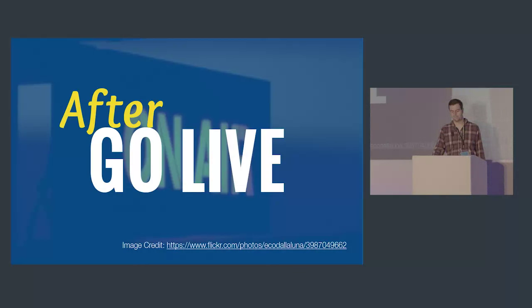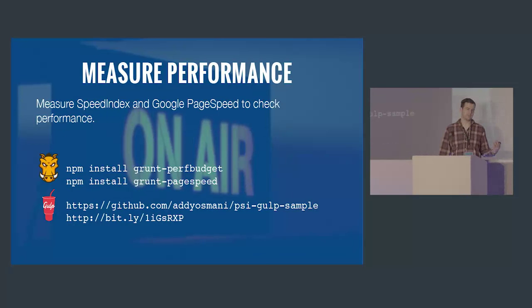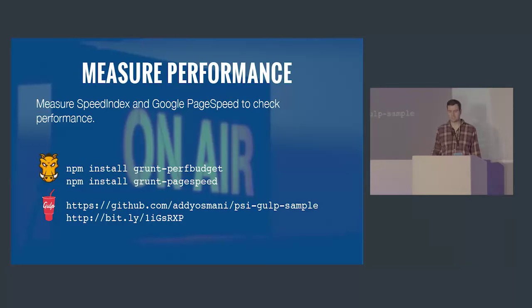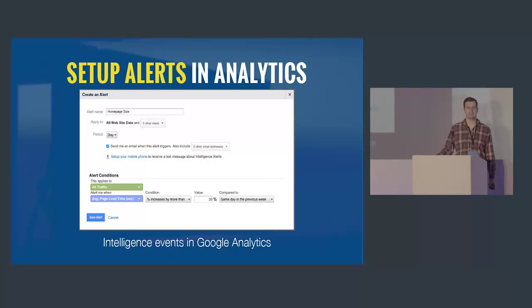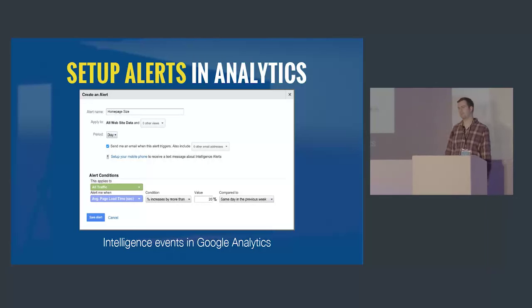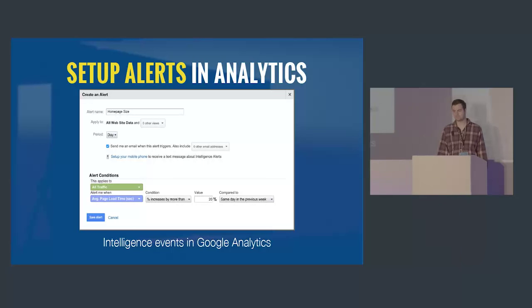What happens after go-live? We can continue to measure our performance. We can use Grunt and Gulp to measure our performance budget through WebPageTest and Page Speed, setting up a workflow that reports back whenever something goes wrong. We can also set up alerts in analytics — Google Analytics has intelligence events — so we can say: whenever my average page load time increases by a certain amount compared to last week, send me an email.